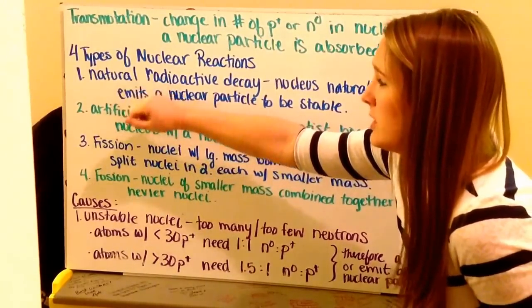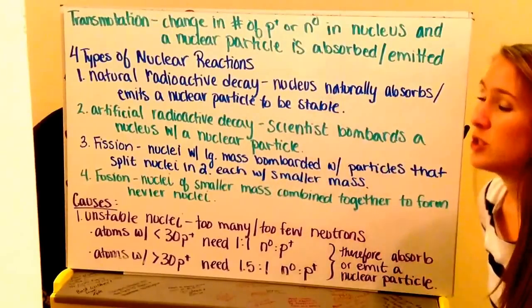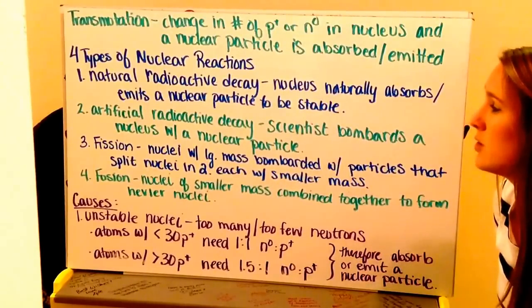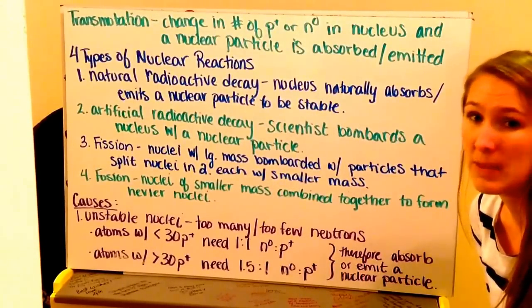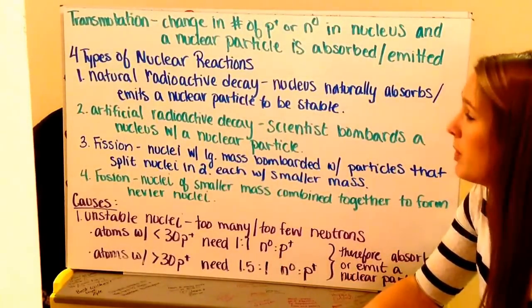Like I said, there are four types. We have natural radioactive decay. This is where a nucleus is going to naturally absorb or emit a nuclear particle. That way it's stable. So this is it looking to be in that band of stability, which is from your POGIL.